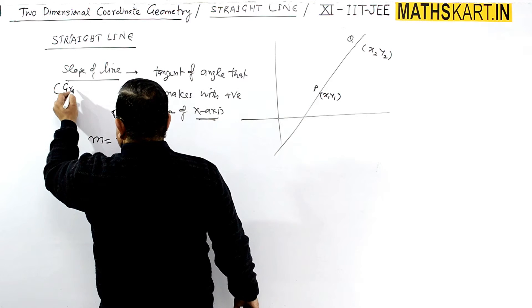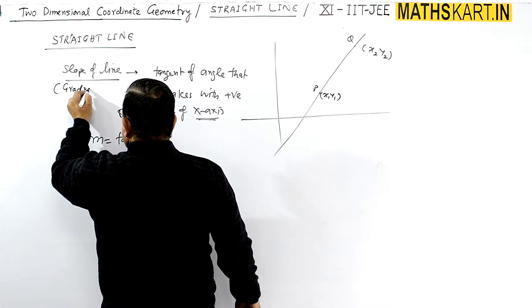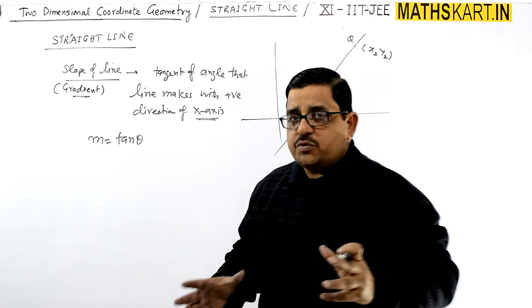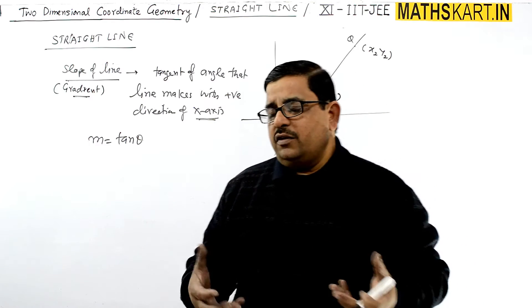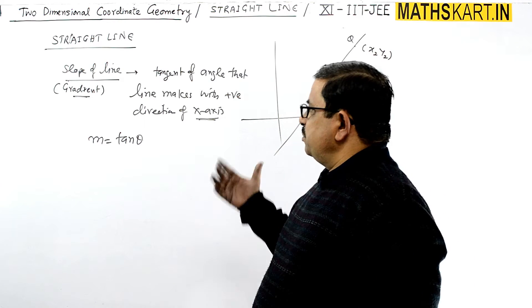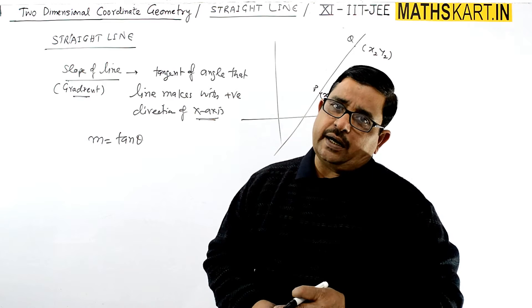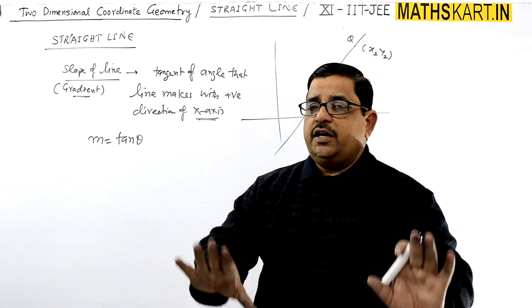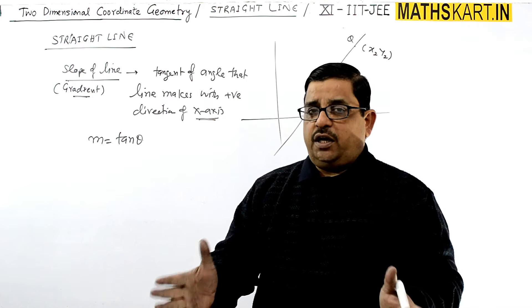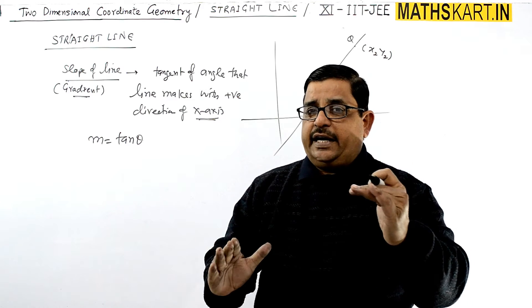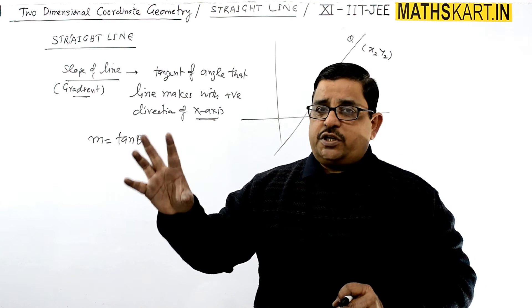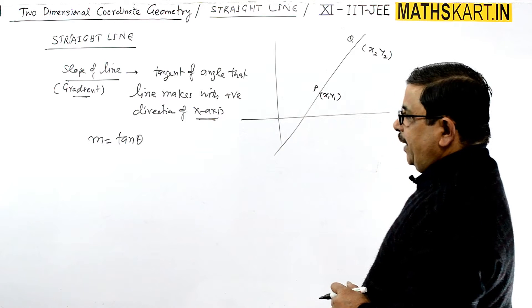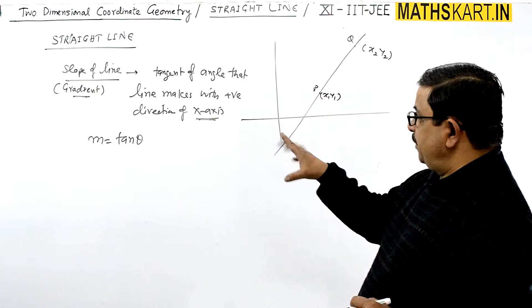This is also called the gradient — the word gradient is normally used in physics. So this is the slope of a line, and slope is denoted by m, which equals tan(θ).